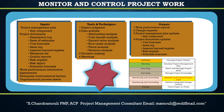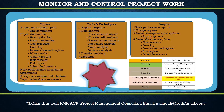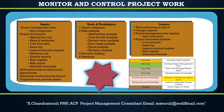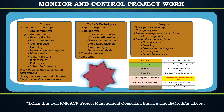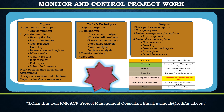The next input is Work Performance Information. Work performance information is the performance data collected from the controlling processes, analyzed in context and integrated based on relationships across areas. Work performance data has been transformed into work performance information. Data alone cannot be used in decision-making as it has only out-of-context meaning; work performance information is correlated and contextualized, providing a foundation for project decisions. It is circulated through communication processes. Examples include status of deliverables, implementation status for change requests, and forecasted estimates to complete.